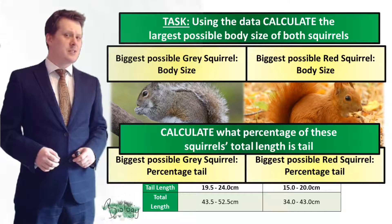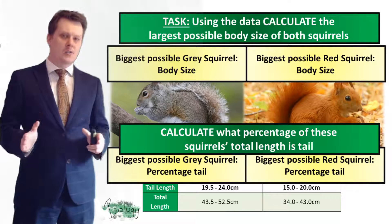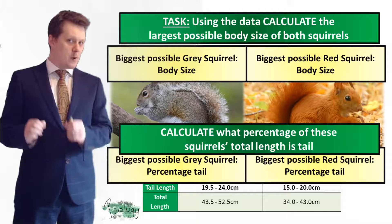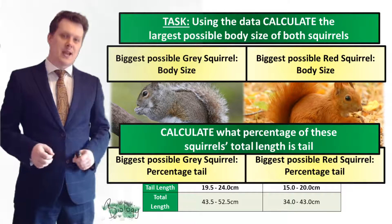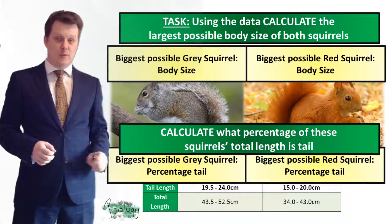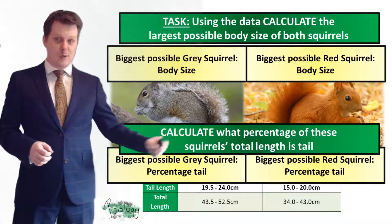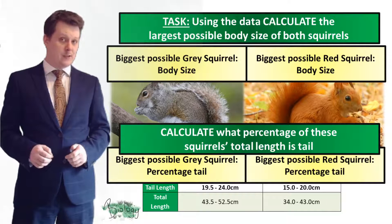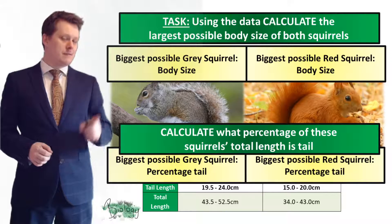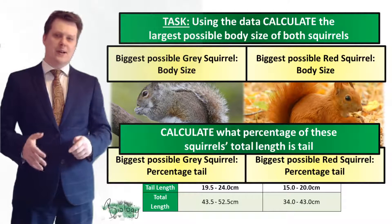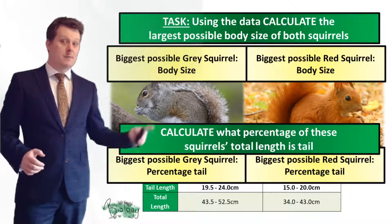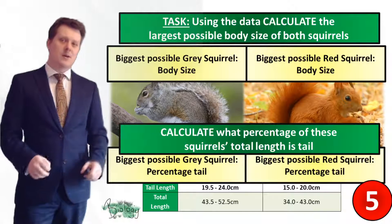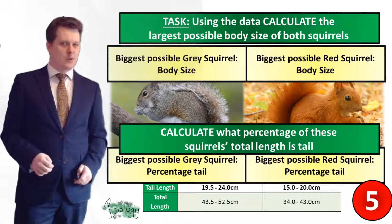Next, use the data in the table to calculate the largest possible body size of both the grey squirrel and the red squirrel. Our table contains the tail length for both squirrels — grey squirrels on the left, red squirrels on the right — and the total length for each. Then, using the figures from these questions, calculate what percentage of each squirrel's total length is tail. Pause the video if you need more time.